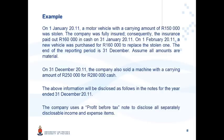An example will illustrate this. On 1 January 2011, a motor vehicle with a carrying amount of 150,000 was stolen — that is the first economic event. The company was fully insured; consequently, the insurance paid out 160,000 in cash on 31 January 2011 — that is the second economic event.